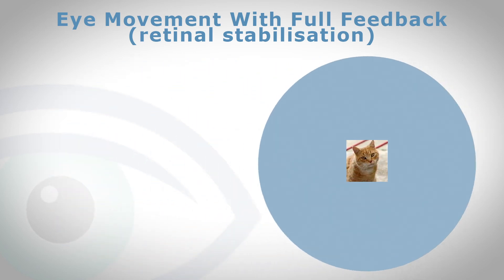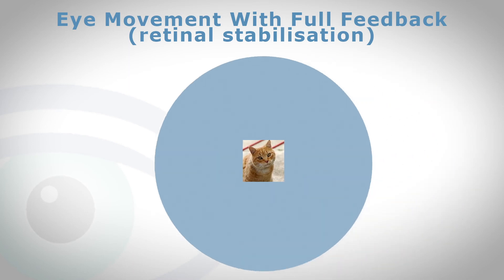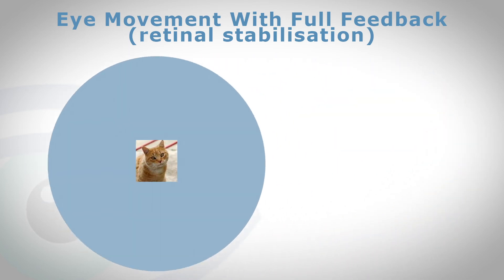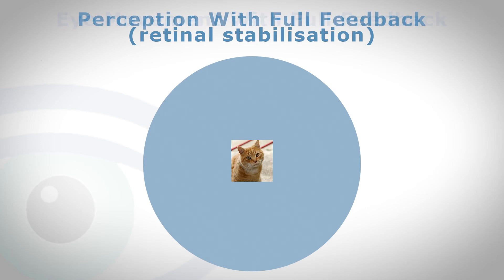In the first situation there is no efference copy. In the second there is full efference copy. We can also get a partial situation — here the field of view is oscillating and the image is also moving but not quite matching the movement of the eye, so the perception of motion is less than your eye movement. You can get this in-between stage as well.